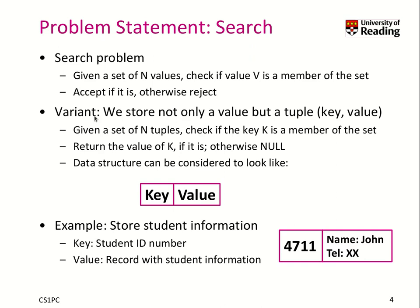A slight extension that is more useful is that we have not only a single value but we are storing a key-value tuple. Now we try to figure out if a specific key is a member of the set, and if it is, we return the value. Otherwise, we return null. So a primitive data structure could be considered to look like this tuple here — we have a key and a value.